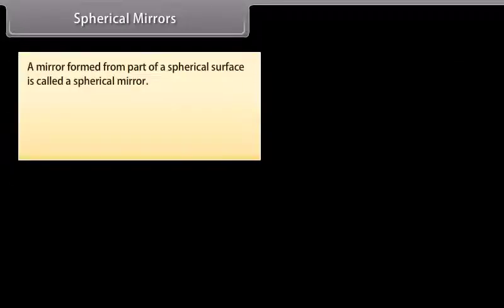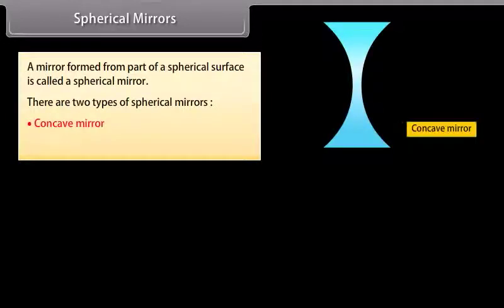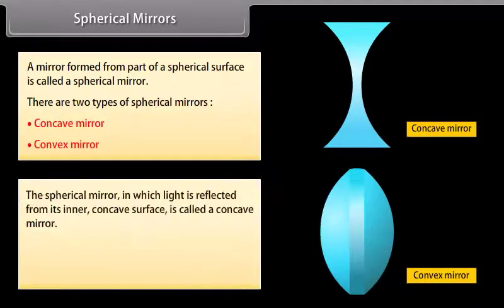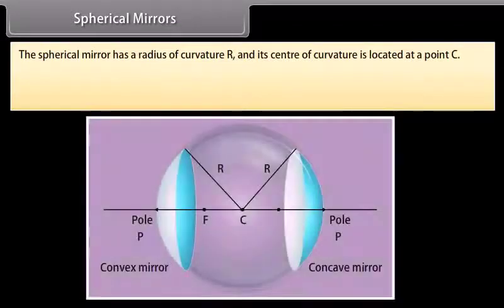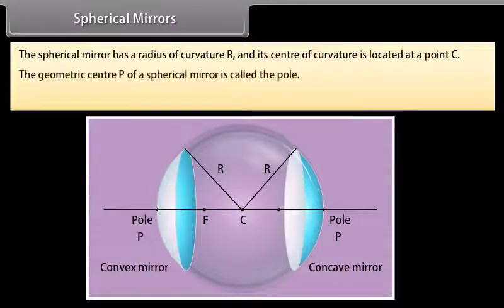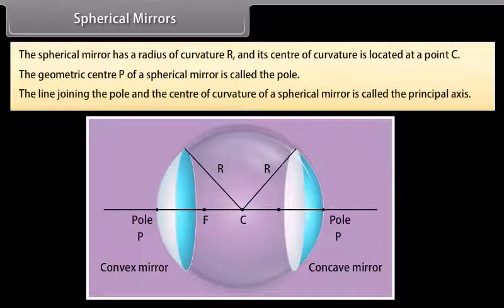A mirror formed from part of a spherical surface is called a spherical mirror. There are two types: a concave mirror, in which light is reflected from its inner concave surface, and a convex mirror, in which light is reflected from its outer convex surface. The spherical mirror has a radius of curvature R, and its center of curvature is located at point C. The geometric center P is called the pole. The line joining the pole and the center of curvature is called the principal axis.